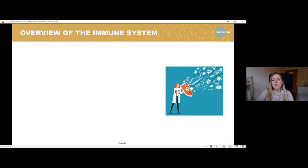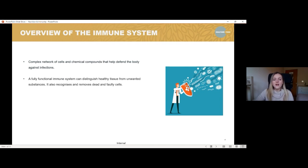So just to give a little bit of an overview of the immune system, the immune system is a complex network of cells and chemical compounds that help defend the body against infections. It's designed to protect us. A general, typical, healthy, fully functioning immune system is able to distinguish between healthy tissue and unhealthy tissue or unwanted substances. It's able to recognize these and put in a plan of action to try and get those out as soon as possible. And it also recognizes and removes dead and faulty cells as well, which is also really important.